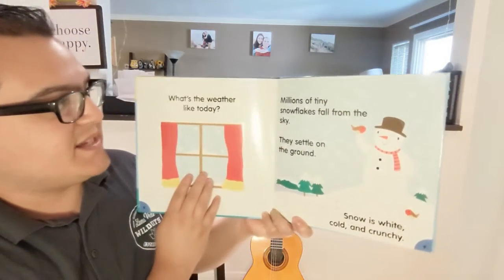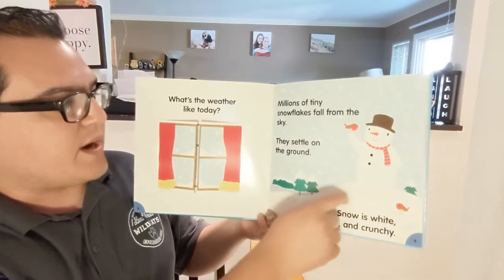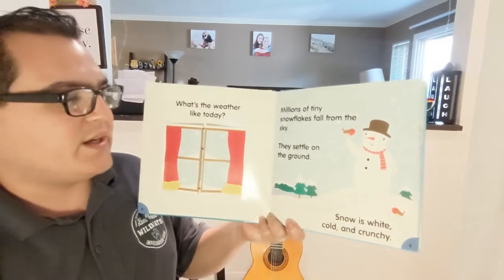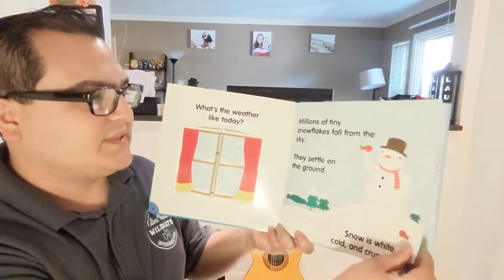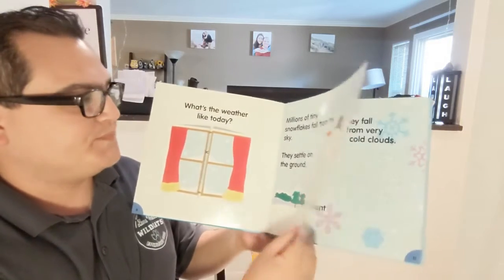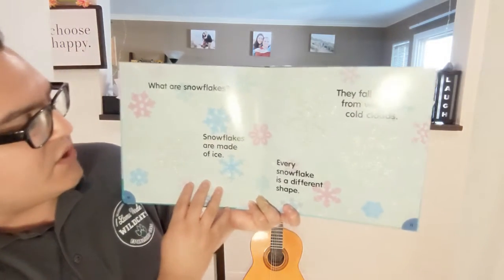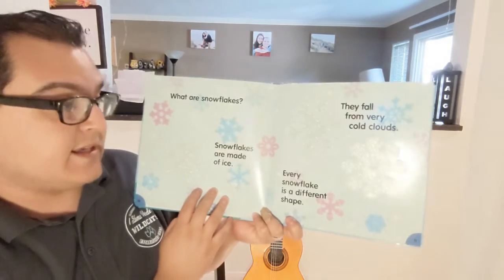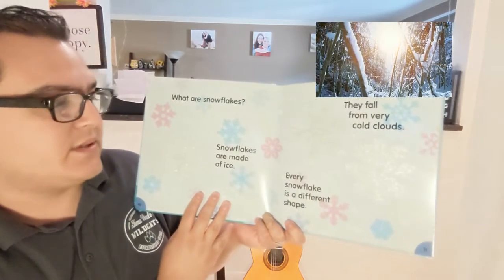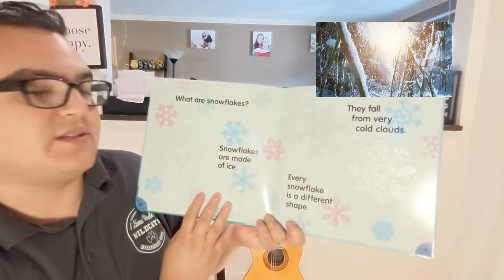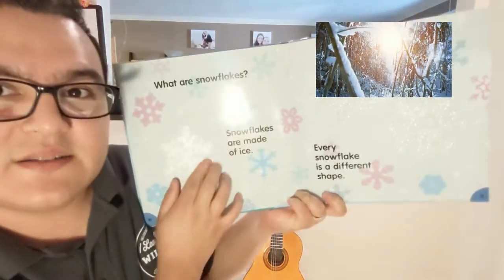Millions of tiny snowflakes fall from the sky. They settle on the ground. Snow is white, cold, and crunchy. What are snowflakes? Snowflakes are made of ice. They fall from very cold clouds. Every snowflake is a different shape.